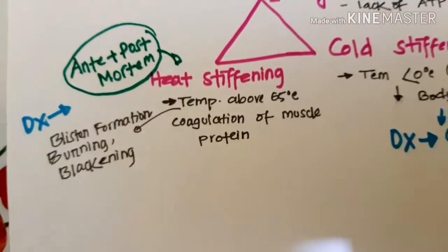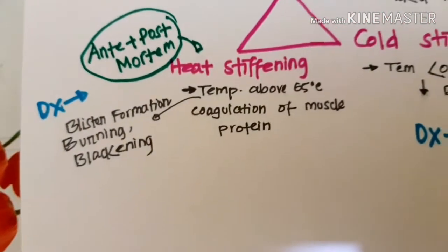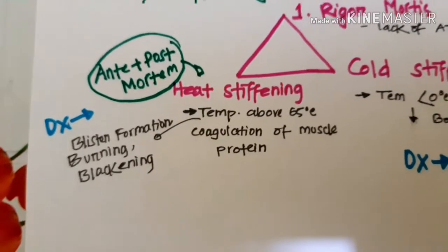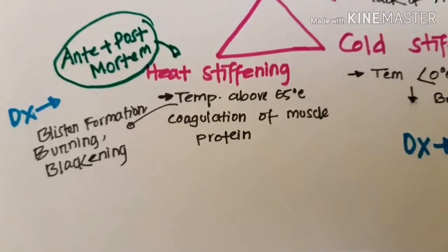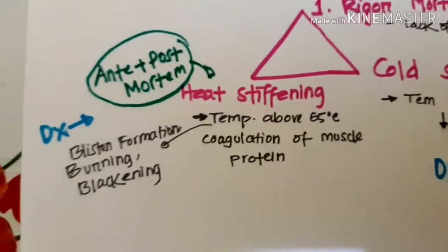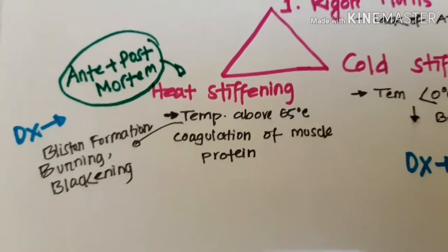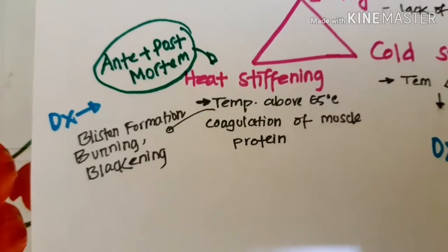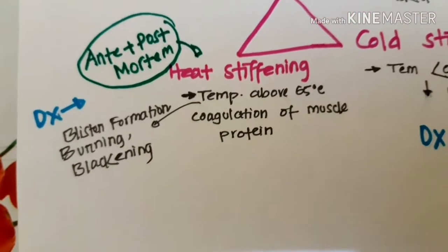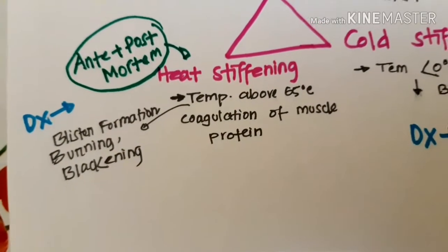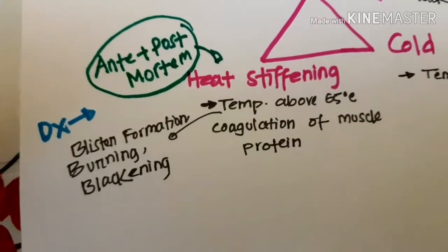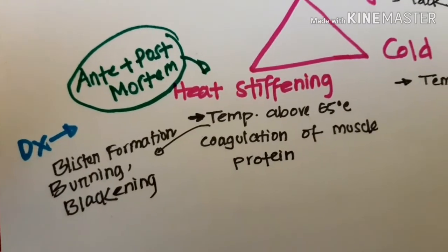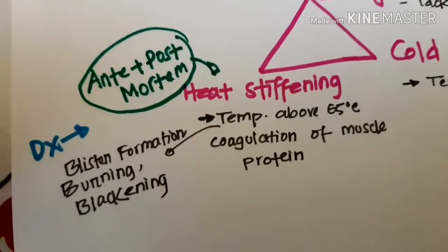Heat stiffening occurs at temperatures above 65 degrees Celsius. At this temperature, the muscle proteins undergo coagulation. When the muscle proteins are coagulated, the body stiffens — this is heat stiffening. Heat stiffening can occur to a burned body and is associated with blister formation, burning, and blackening of the body. Heat stiffening is only a post-mortem phenomenon — it occurs only after death.